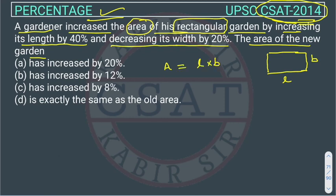Now what the gardener did—he increased its length by 40%. So the new length will be L plus 40% of L, so this will come out 140L upon 100. The zeros will cancel, this is 7 by 5L.